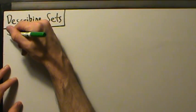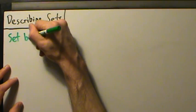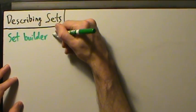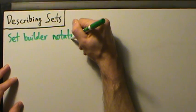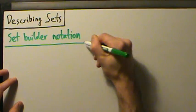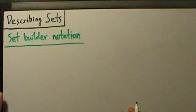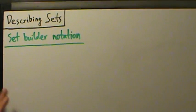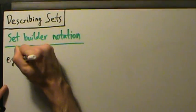In the last video we talked about describing sets using the listing method, where we literally take the elements in a set and just list them out. Sometimes that might be difficult, tedious, or even impossible if we have too many elements to list. In that case, one option is to use what's called set-builder notation. This has two parts to it. Let's start with an example.